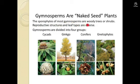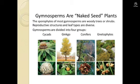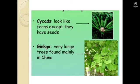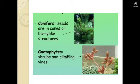Gymnosperms are the native plants. The sporophytes of most gymnosperms are woody shrubs or trees. Seeds — well, the fruit of ginkgo looks like a strawberry, isn't it. Conifers look like this, and cycads look like this. They have seeds — like this — and ginkgo are mainly found in China.